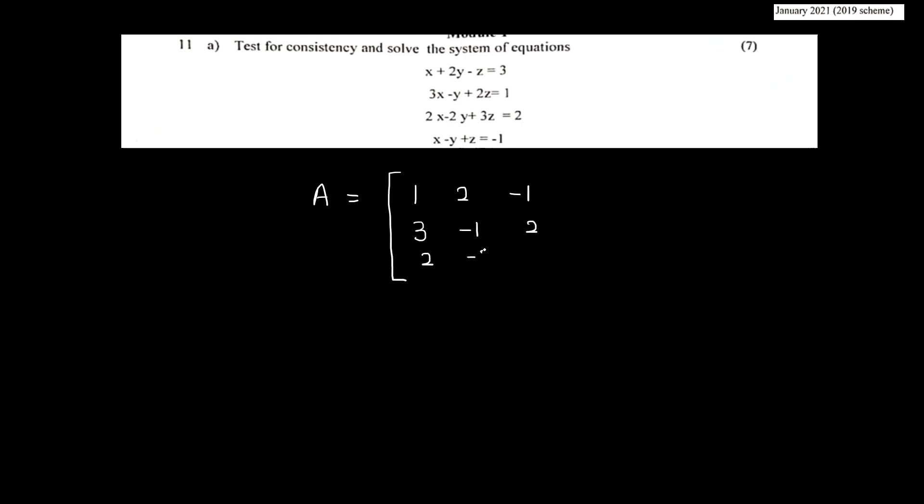I will write a matrix. The coefficients are: x equals 1, y equals 2, z equals minus 1 for the first row. x equals 3, y equals minus 1, z equals 2 for the second row. Then 2, minus 2, 3 and 1, minus 1, 1. The right-hand side values are 3, 1, 2, minus 1.